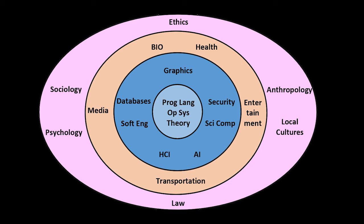To some extent, computing had long intersected a number of these areas — for instance, sociology and psychology had always intersected discussions of AI. But as we got into more and more applications, and computing touching more and more parts of our lives, the importance of ethics and legal issues, and the other areas shown in this diagram, became far more paramount. Computing started becoming this field that is totally connected to most of these other areas of science and social science.